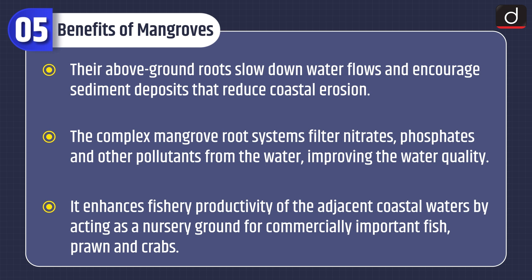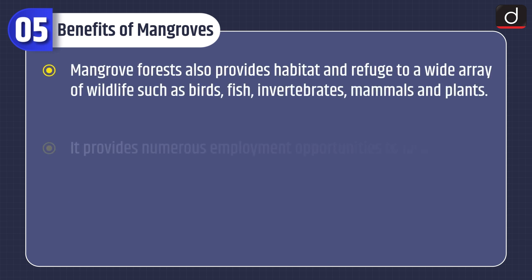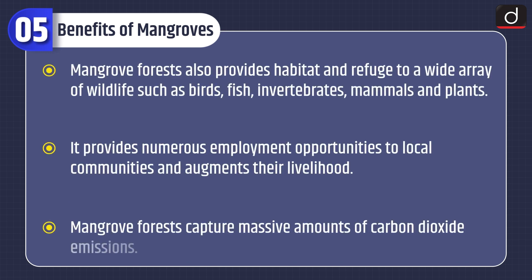Mangroves enhance fishery productivity of adjacent coastal waters by acting as nursery ground for commercially important fish, prawn, and crabs. Mangrove forests also provide habitat and refuge to a wide array of wildlife such as birds, fish, invertebrates, mammals, and plants. They provide numerous employment opportunities to local communities and augment their livelihoods. Mangrove forests also capture massive amounts of carbon dioxide emissions.